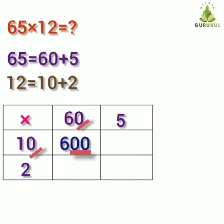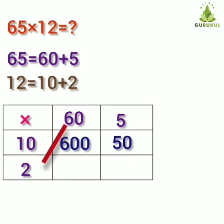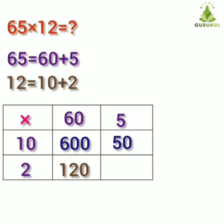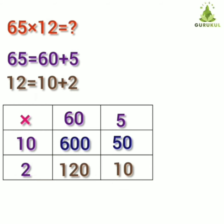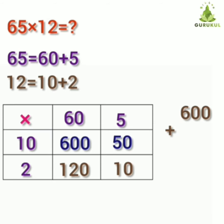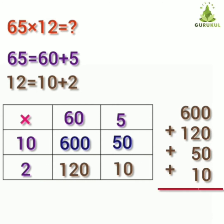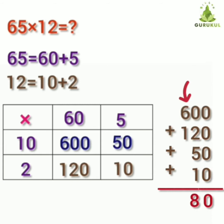Now multiply 5 by 10 — 5 tens are 50. Second step: 6 twos are 12, put remaining 0, meaning 60 multiplied by 2 is 120. Multiply 5 by 2 — 5 twos are 10. Add all the products: 600 plus 120 plus 50 plus 10. Add all units: 0. Add all tens: 2 plus 5 plus 1 is 8. Add all hundreds: 6 plus 1 is equal to 7.